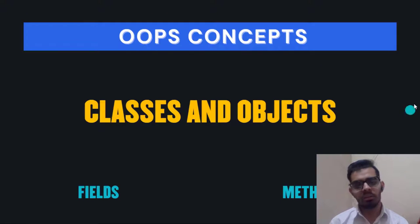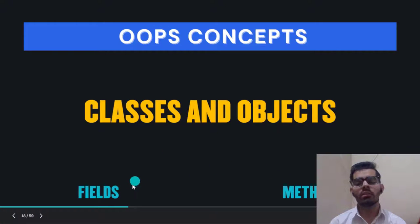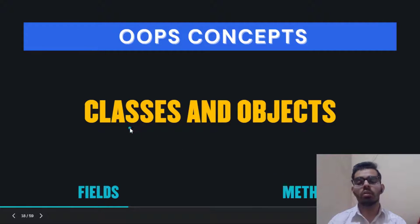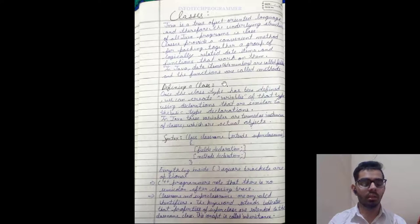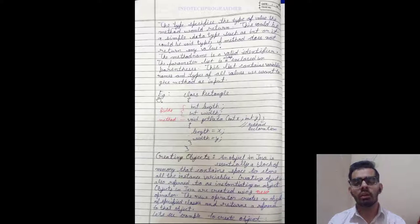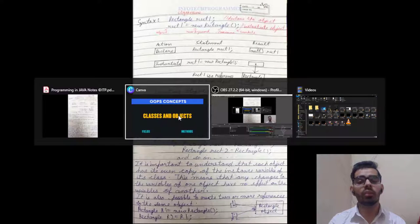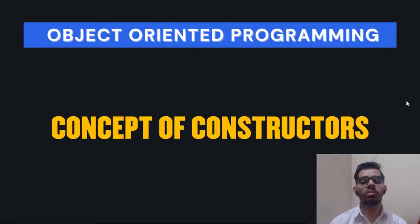Next we have OOP concepts — object-oriented programming. In this we have classes and objects: how to work with classes, how to work with objects. Fields are variables used inside classes, and methods are functions used inside classes. I've provided notes for that, showing how fields and methods are declared, their syntax, how to create objects, and a proper program to explain everything. Don't worry — each and every concept has its program.